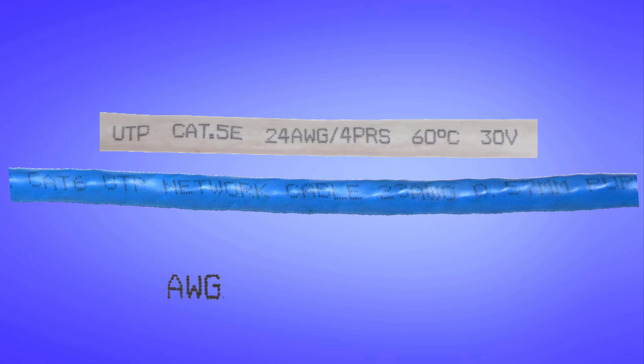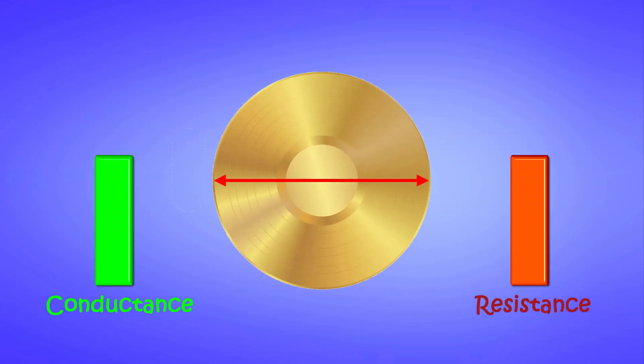As the AWG is a fractional figure, the lower the number, the thicker is the wire, and higher number means thinner wires. So here in this example, a 23 AWG is thicker or better than a 24 AWG.